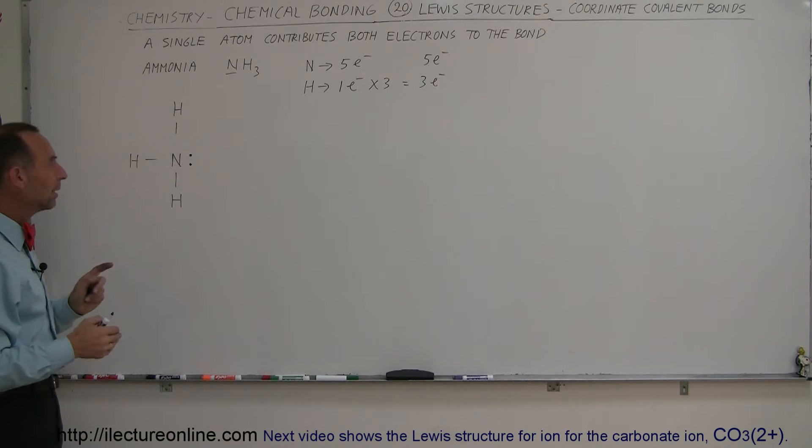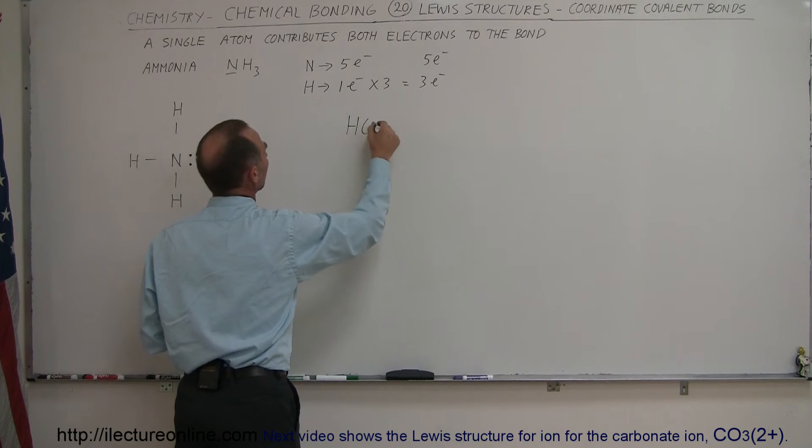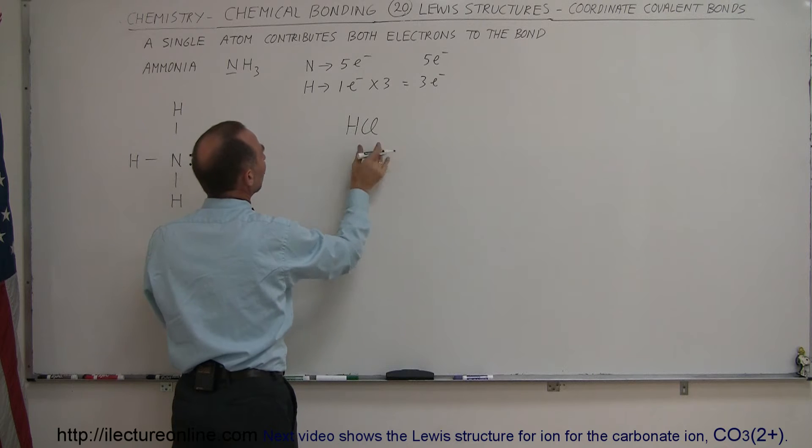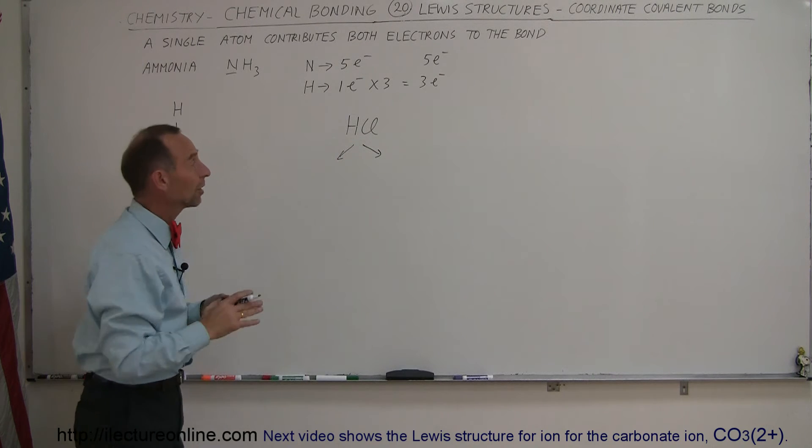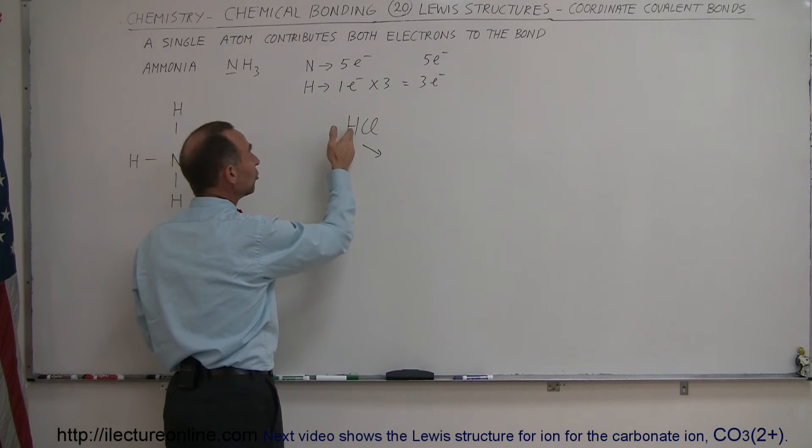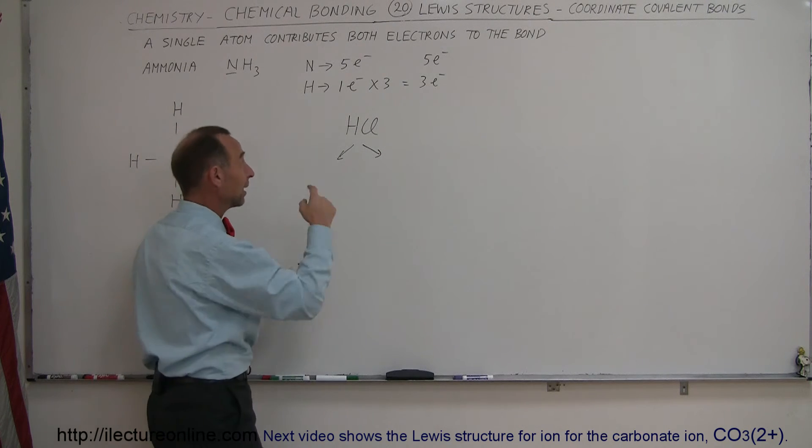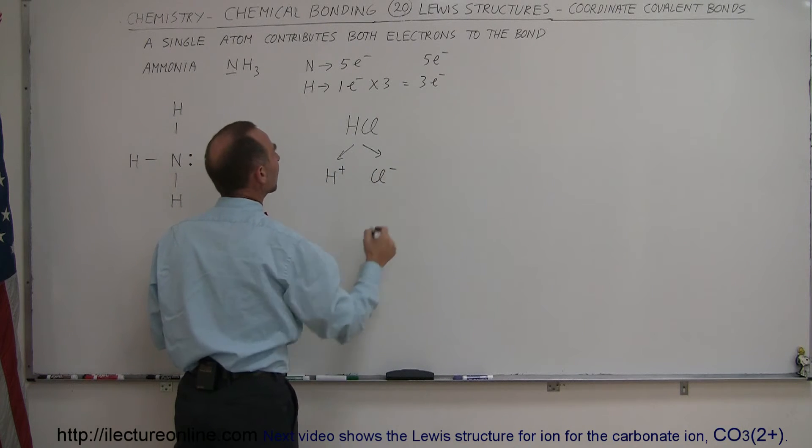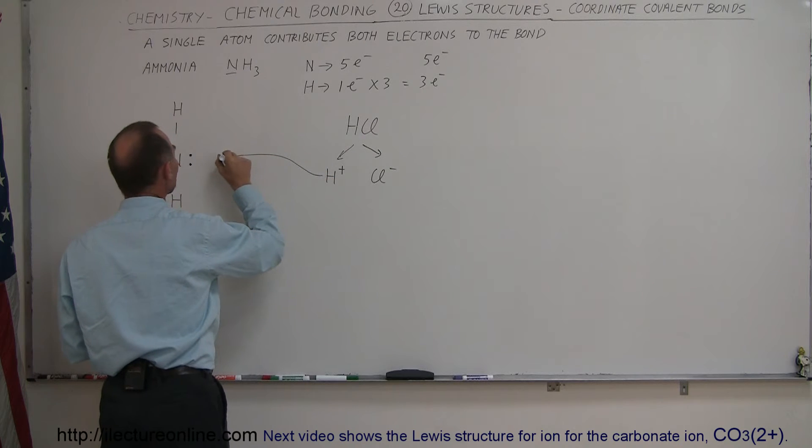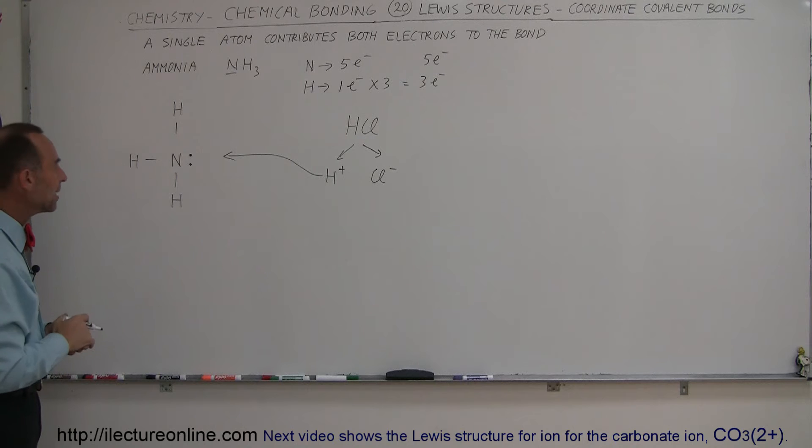Now what happens when a hydrogen ion happens to come along? For example, let's say we start out with hydrogen chloride, and they're separated. Typically, when hydrogen chloride is separated, hydrogen will lose its electron to the chlorine, because chlorine is much more electronegative than hydrogen. So hydrogen becomes a positive ion, and chlorine becomes a negative ion. And if that positive ion gets attracted to the ammonia, it will now form an ammonium ion.